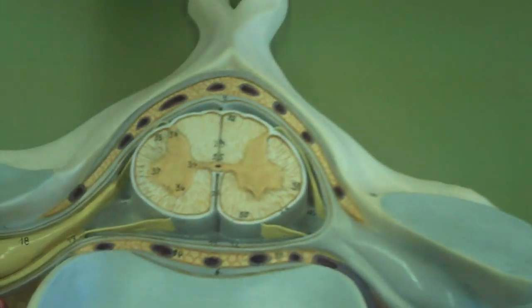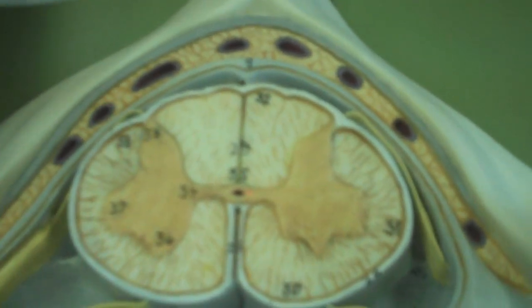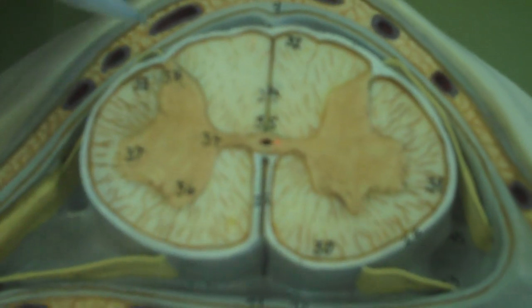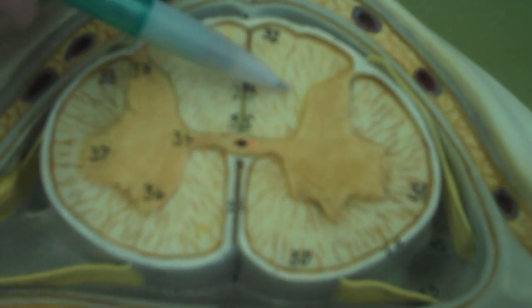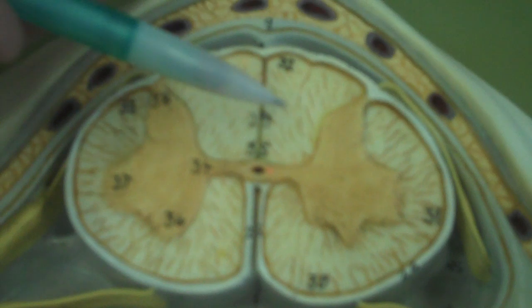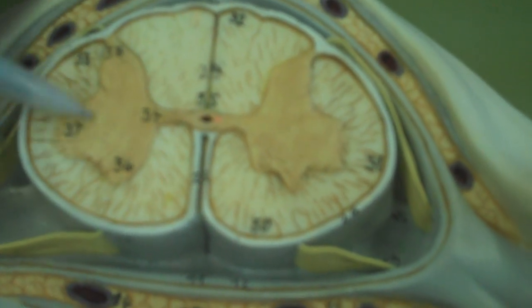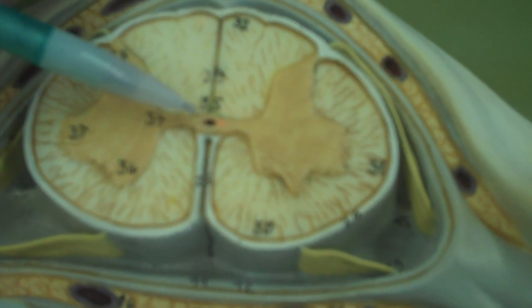Alright, so let's look in here at the spinal cord. You can see this structure on the inside surrounded by this white. This white on the outside is the white matter of the spinal cord. While all this orange stuff in here is the gray matter.